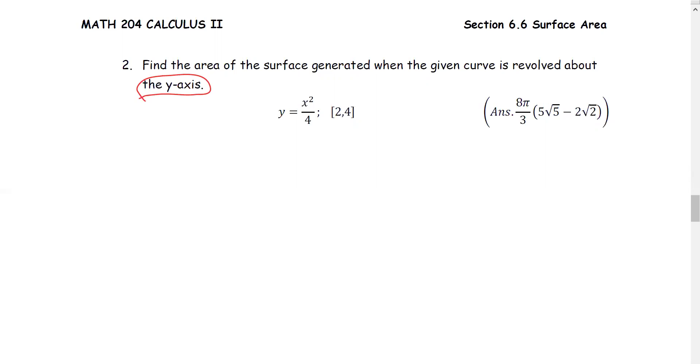For our case, y is given as x squared over 4 between x equals 2 and x equals 4. For x equals 2, y equals 2 squared over 4, which is 1. For x equals 4, y equals 4 squared over 4, which is 4. Therefore, the interval for y will be between 1 and 4.